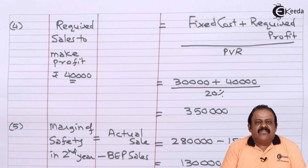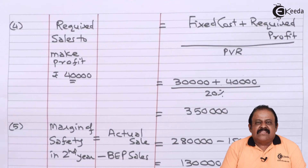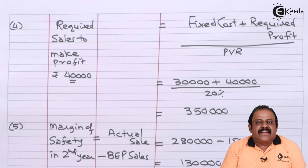In this question, when actual variable cost and fixed cost are not directly given, and only two years' sales and profit information is provided, we were able to calculate all the required figures. Thanks for watching this video. Stay tuned with Ikida and subscribe to our channel. Thank you.